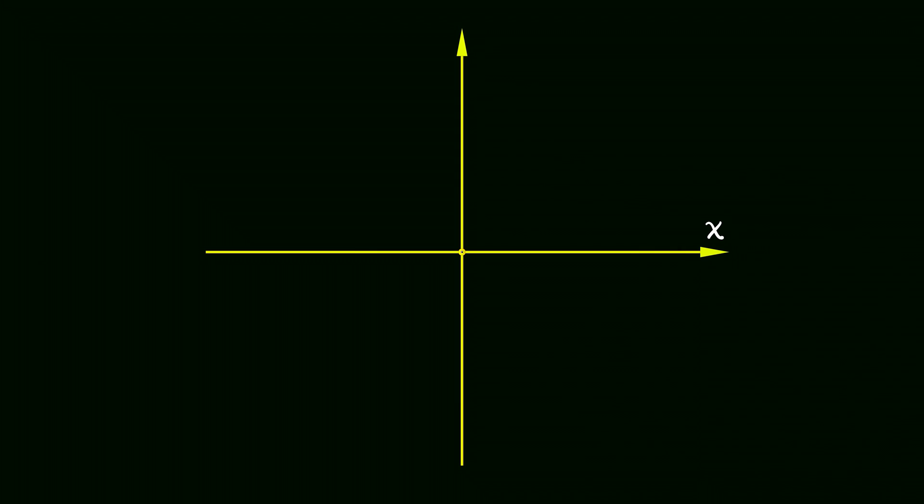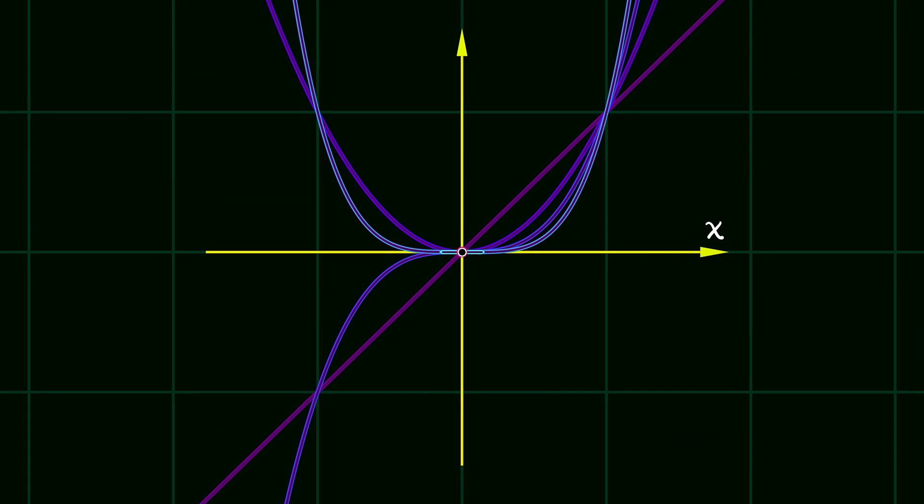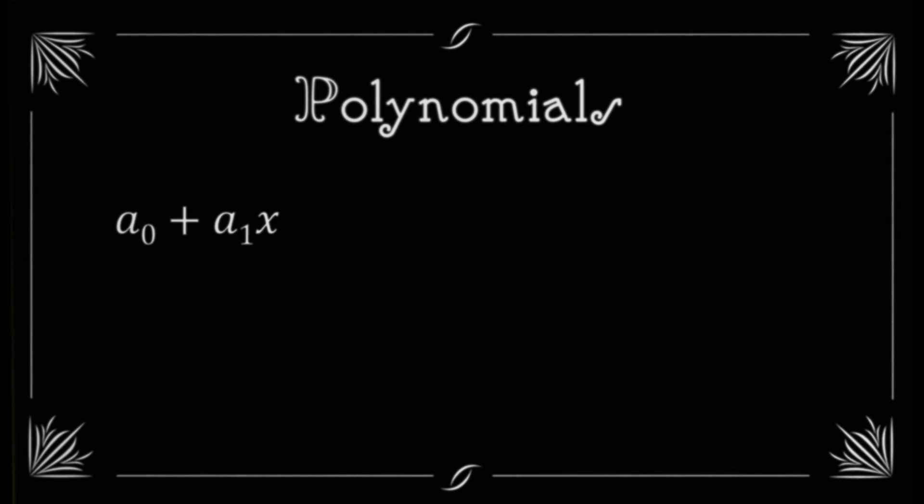So think back. Think way back to when you first learned about polynomials. These are comprised of monomial terms, either constant, linear, quadratic, cubic. The degree of a polynomial is the maximal monomial term power.